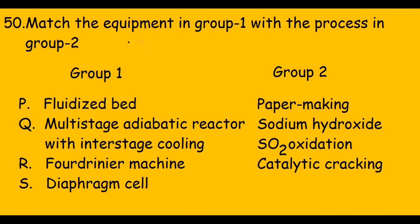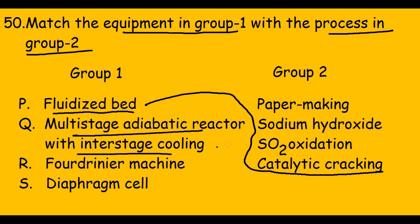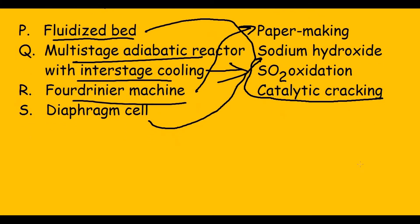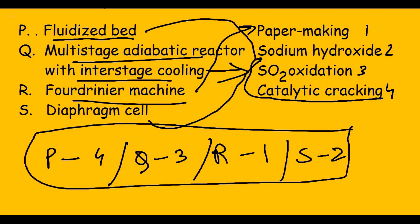This is a match-the-following question: match equipment in group one with the process in group two. Fluidized bed corresponds to catalytic cracking (option 4); multi-stage adiabatic reactor with inter-stage cooling corresponds to SO2 oxidation (option 3); four-grinder machine corresponds to paper making (option 1); and diaphragm cell corresponds to sodium hydroxide (option 2). This question came for two marks.